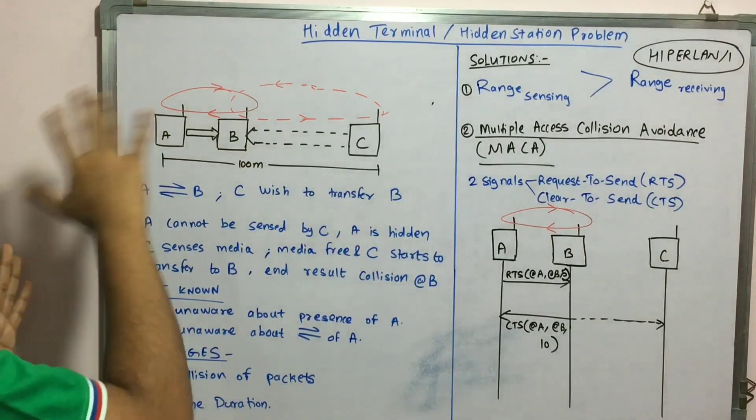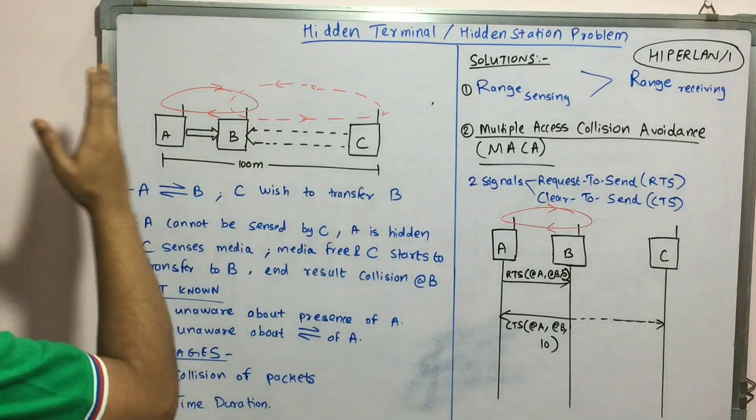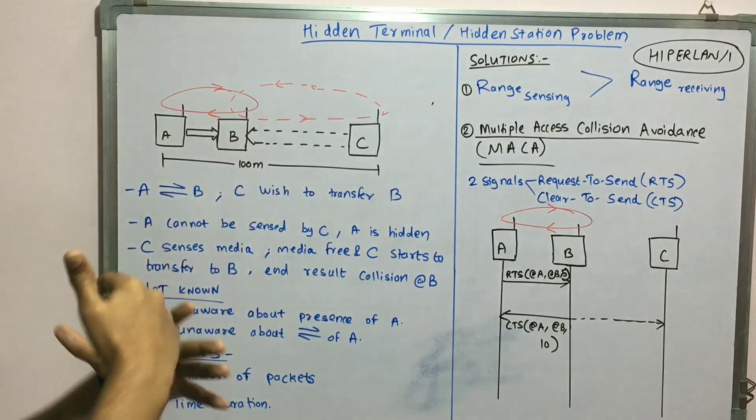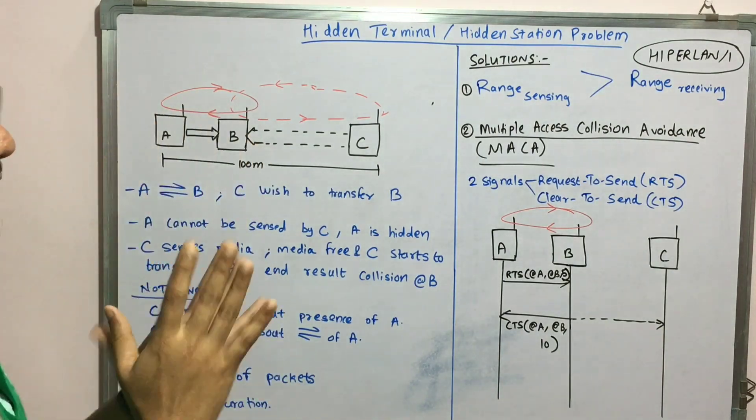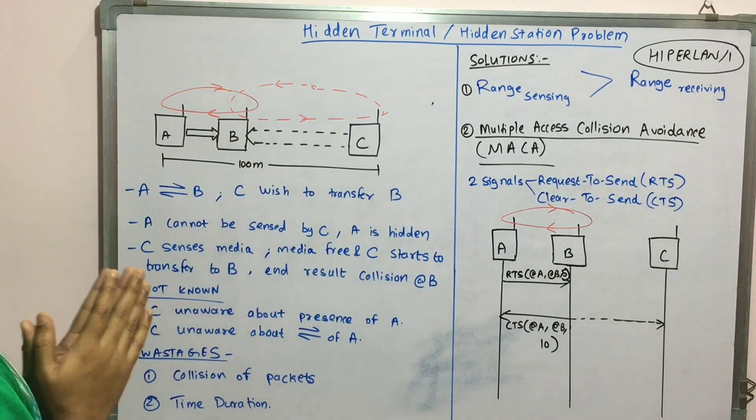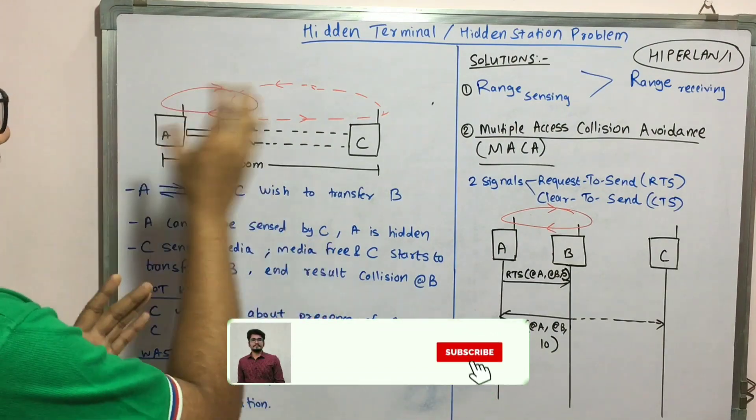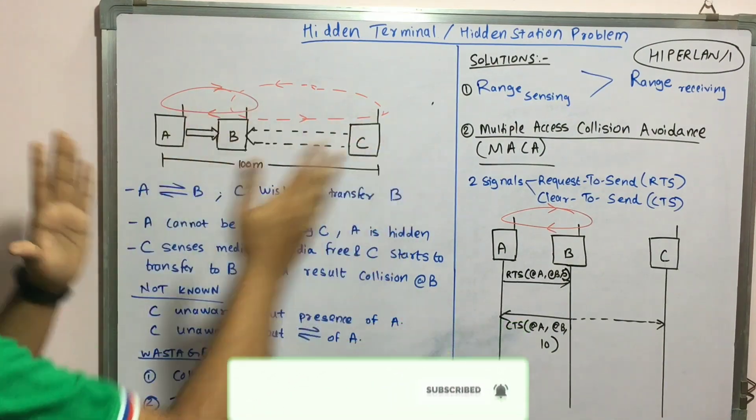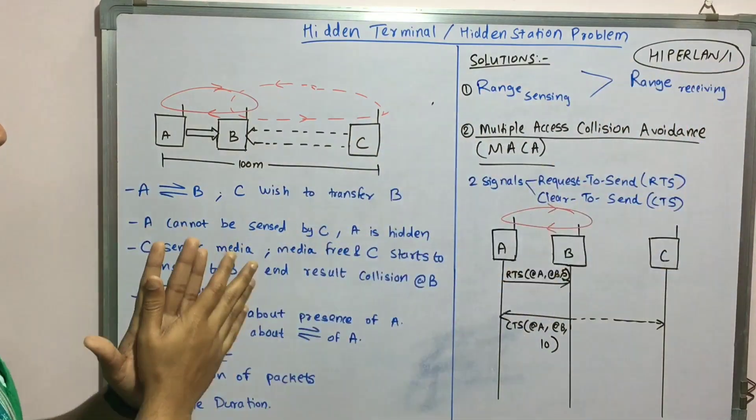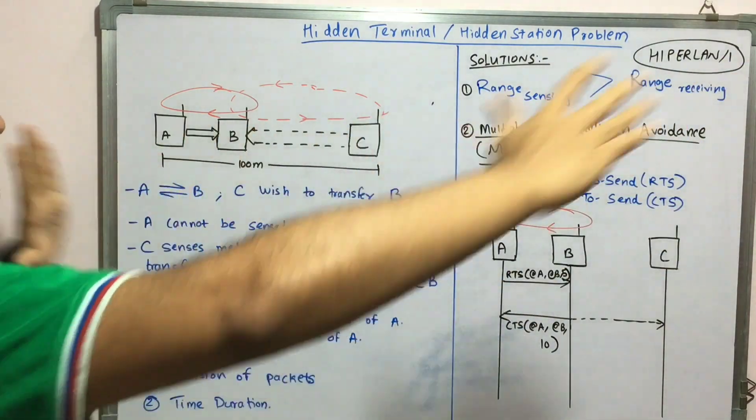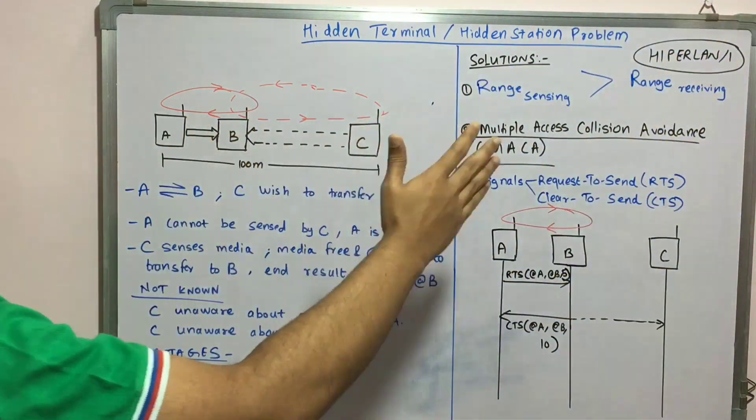To start with, we basically consider three different stations. I'll explain with the help of a simple example. Consider B is a girl and A and C are two different guys. These two guys are well separated from each other, meaning C and A are at a very long distance, say for example 100 meters.